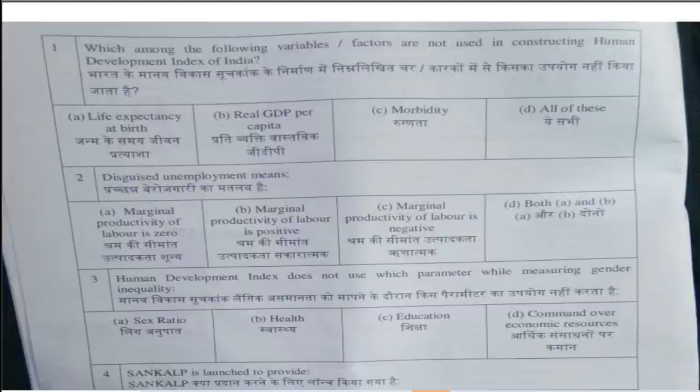The first question in this series was: Which among the following variables or factors are not used in constructing Human Development Index of India? The answer is option D, all of these. Second question is: Disguised Unemployment Means? This answer is option A, Marginal Productivity of Labour is 0.